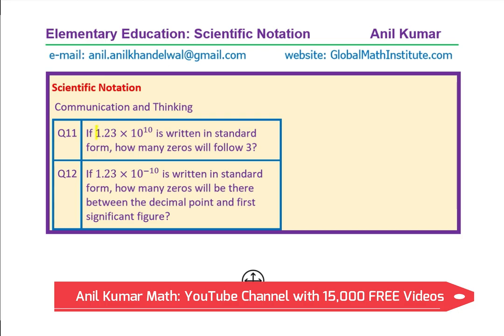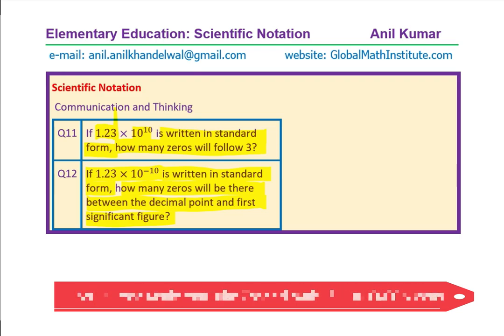If 1.23 times 10 to the power of 10 is written in the standard form, in standard form we mean expanded, right? So 1, 2, 3, 0, 0, 0, 0 and so on. How many zeros will follow the number 3? That's the question for you. Question number 12 is, if 1.23 into 10 to the power of minus 10 is written in the standard form, how many zeros will be there between the decimal point and the first significant figure? Extremely important questions.